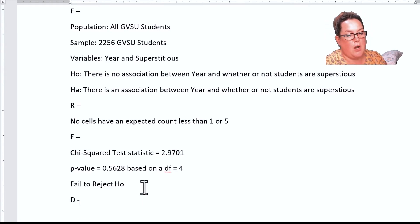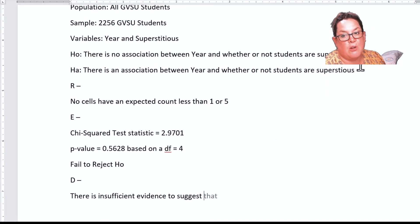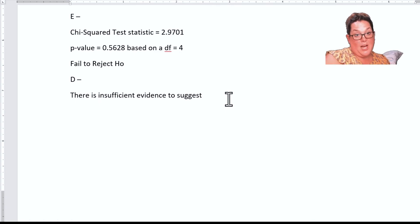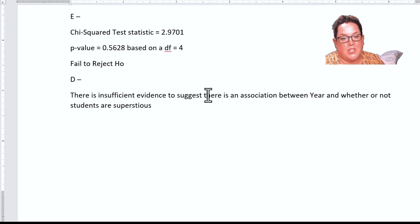Because of that we're failing to reject the null and that's the end of our E. So our last part for drawing conclusions, when you say fail to reject you say there is insufficient evidence. We always say that when it goes with fail to reject, so there's insufficient evidence to suggest, and remember you're always restating your alternative. I'm going to copy and paste: there's insufficient evidence to suggest there's an association between year and whether or not GVSU students are superstitious.